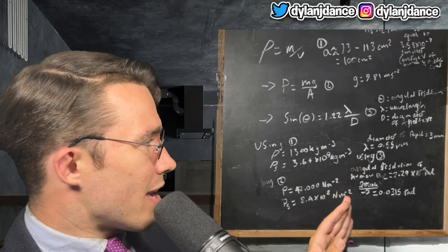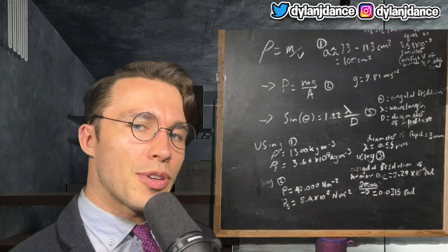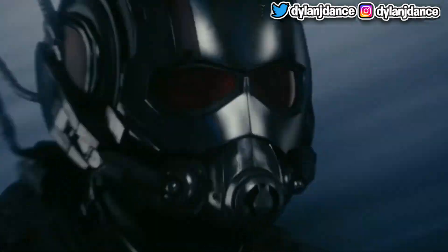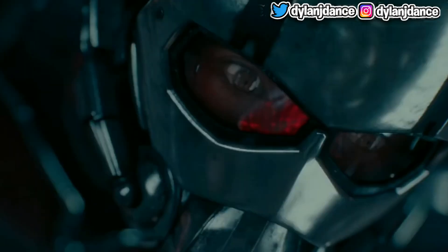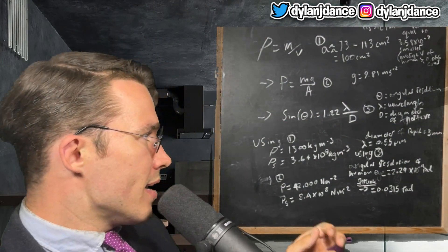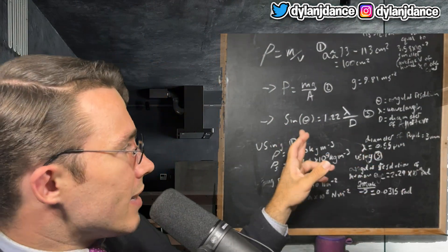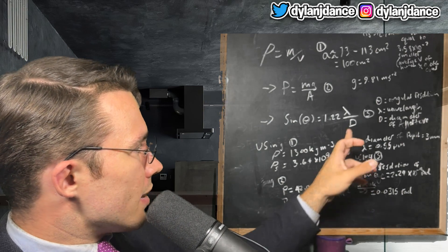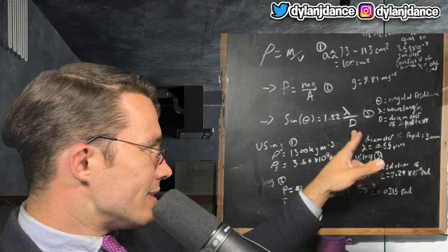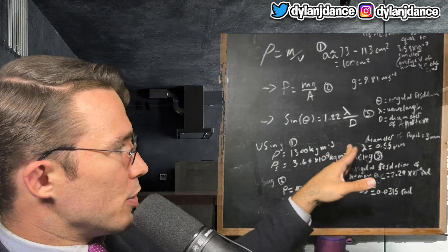Let's also calculate the effects his small size would have on his vision. We can estimate the minimum angular resolution of an aperture — the pupil of the eye — which is given by the Rayleigh criterion, where theta is the angular resolution, lambda is the wavelength of the light, and D is the diameter of the aperture.